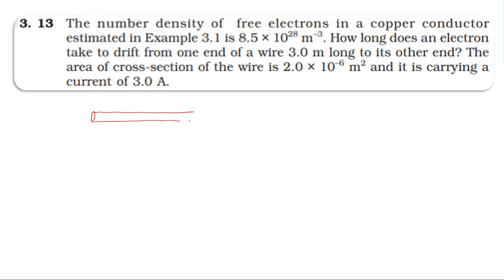In the area of cross-section, the current of 3 amperes, the length of the wire is 3 meters. The free electron density is 8.5 into 10 power 28. If electrons travel from one end to the other end, we need to find the time.